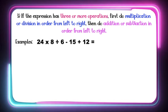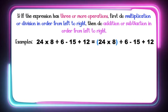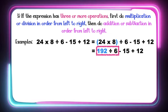Let's have another example: 24 times 8 divided by 6 minus 15 plus 12. Look at the multiplication and division, children — which comes first? From the left, we have multiplication first, so we are going to multiply. 24 times 8 is equal to 192. Then after multiply, we are going to divide. 192 divided by 6 is equal to 32.